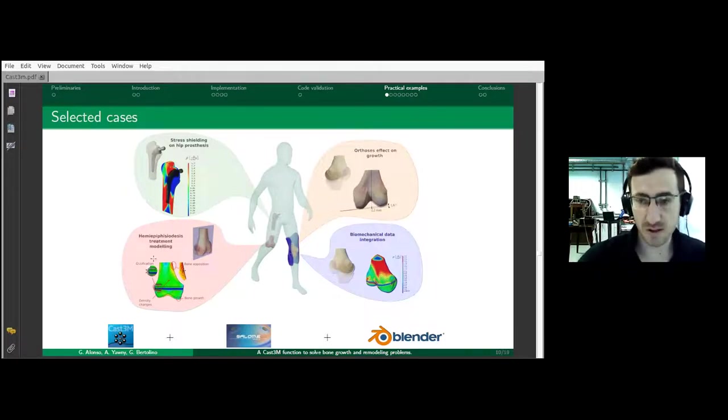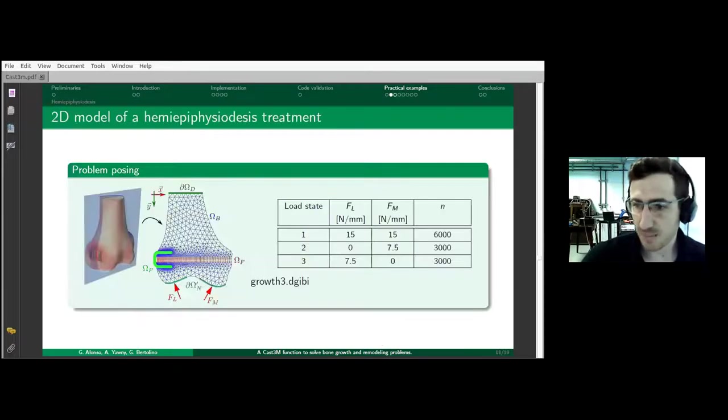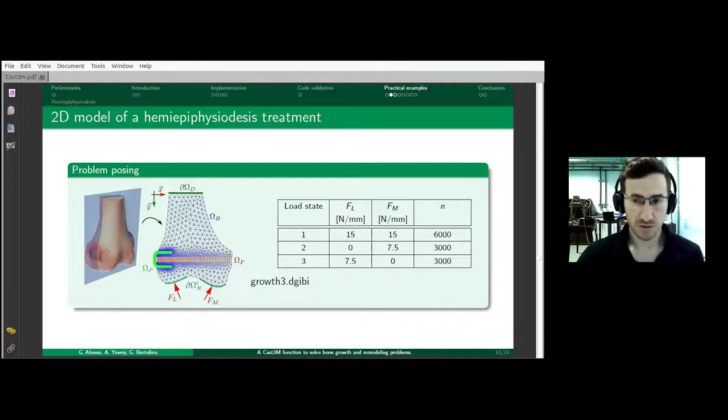I show you four examples that show well all the capabilities of this function. I begin with hemi-epiphyseal disease treatment. I show you how to integrate biomechanical data into this software, how we use it to compute the effect of an orthotic device, and how we can use it to compute a classical problem in bone remodeling, which is stress shielding. A hemi-epiphyseal disease treatment consists in, when there is asymmetrical growth in bone, a surgeon can insert a few staples in the side of the epiphyseal plate that is growing the fastest.